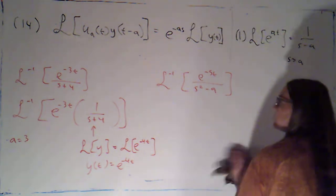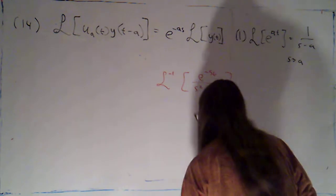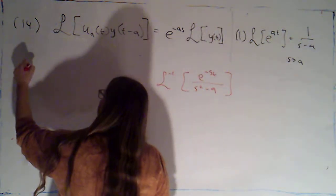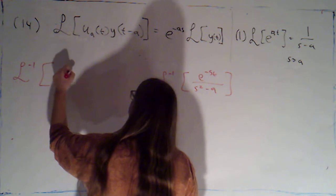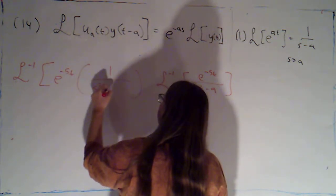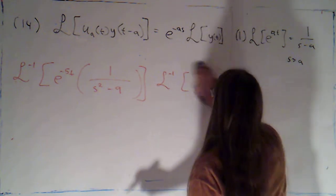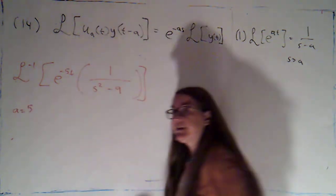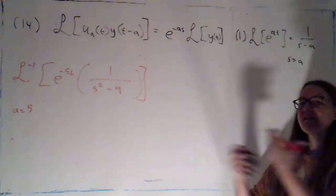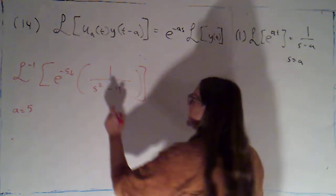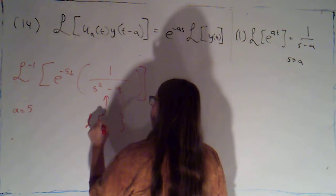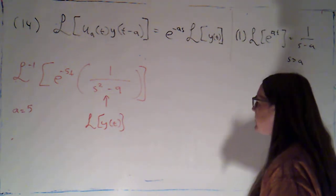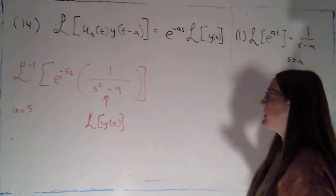Let's try the second one. I'm going to do the same thing to start out with — rewrite this as a product so I can focus on the two individual factors. We're trying to take the inverse Laplace transform of e to the negative 5s times 1 over s squared minus 9. I can see here my a is 5. That'll be the time at which I'm turning things on and the amount I'm going to shift my function to the right. I want to view 1 over s squared minus 9 as the Laplace transform of some function y — the function I'll shift 5 units to the right.